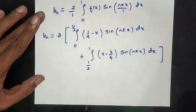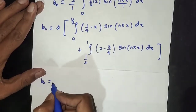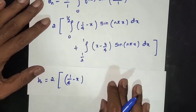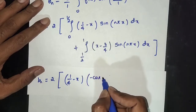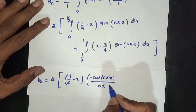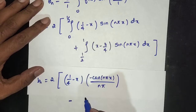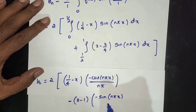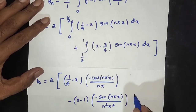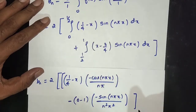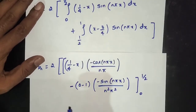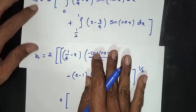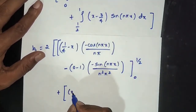Applying integration by parts: 2 times (1/4 minus x) multiplied by the integral of sin(n pi x), which gives minus cos(n pi x) all divided by n pi, minus differentiating (1/4 minus x) gives minus 1, times minus sin(n pi x) divided by n squared pi squared, with limit 0 to 1/2. Plus the term for (x minus 3/4).